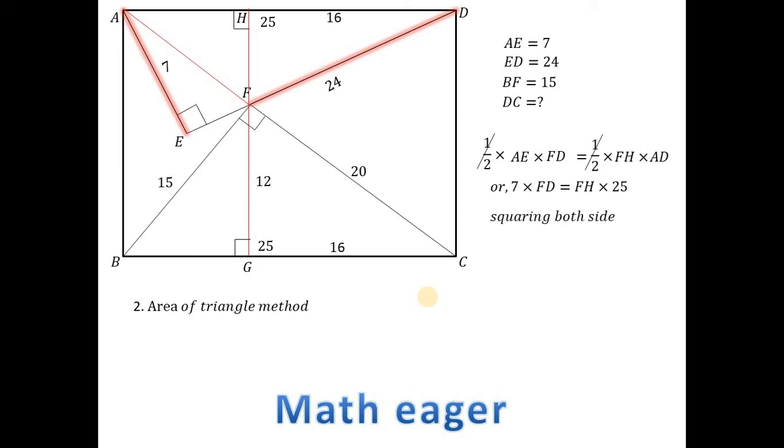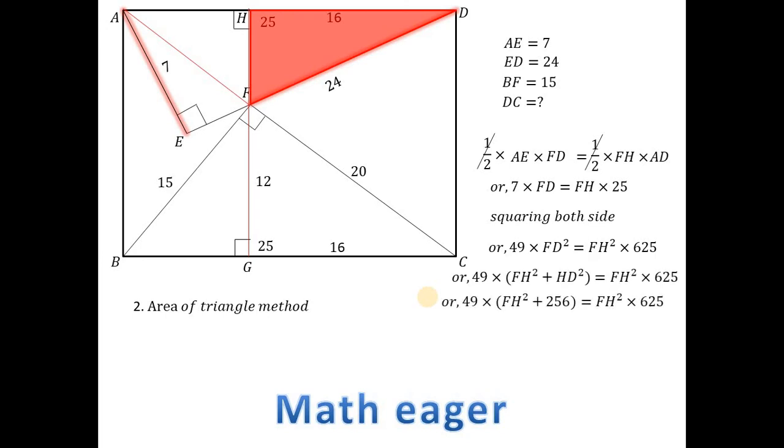Squaring both sides, we get 49 × FD² = FH² × 625. And look, the triangle FHD is also a right-angled triangle, so FD² = FH² + HD² by Pythagoras theorem. Simplifying, HD is 16, so HD² is 256. And simplifying, we get FH² = 49 × 256 / 576, which means FH = 14/3.